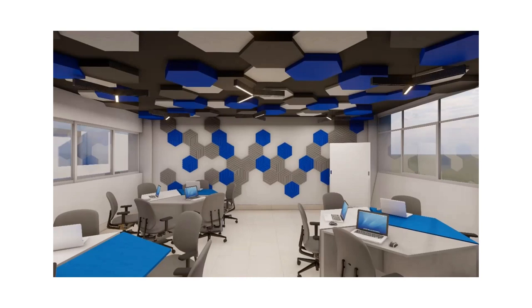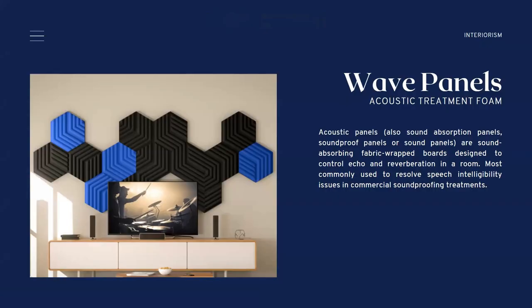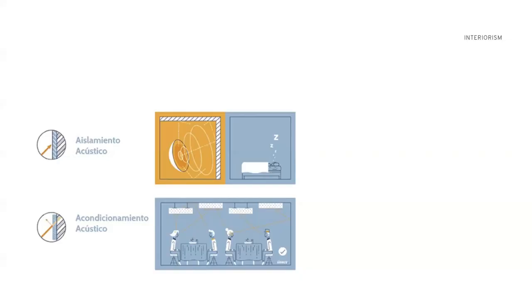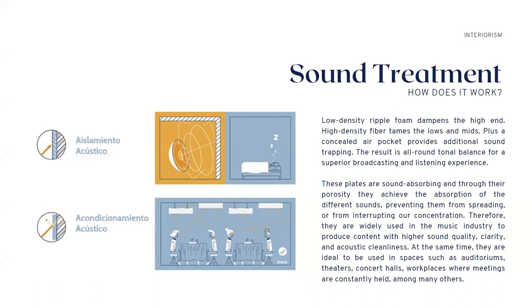We think this classroom will help architecture students, who spend most of their time in front of a computer, have a pleasant time in the classroom. The first material we propose are the wave panels, located at the back of the classroom as seen in the renders. These work because of the material they are made of — it does not reflect or bounce the sound, it absorbs it.